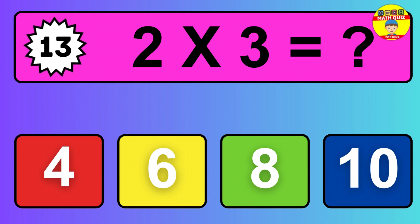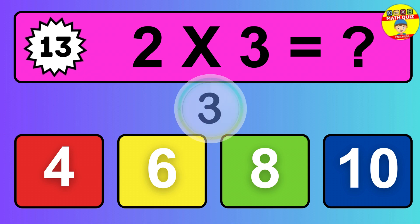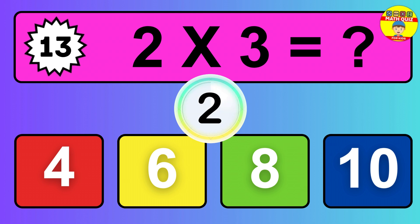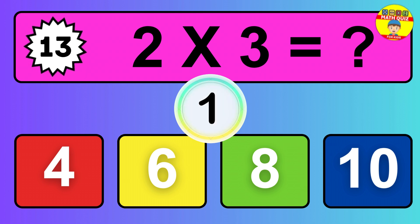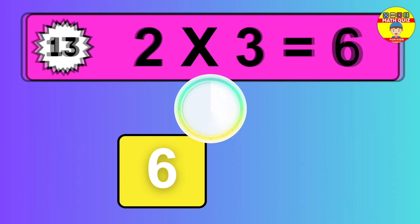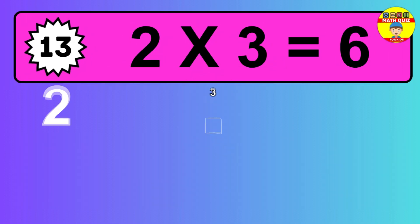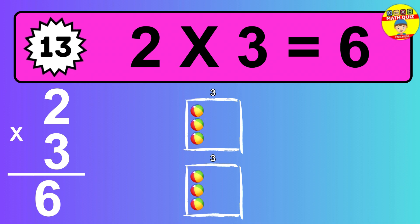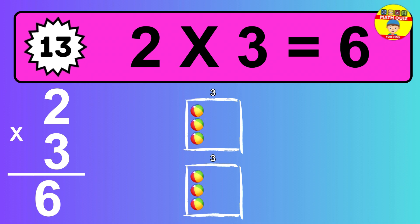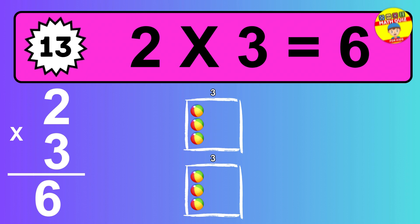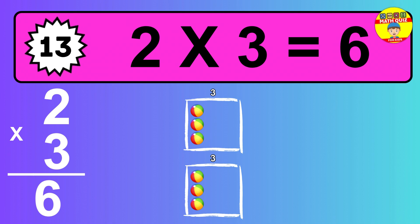Question 13. Two times three equals what? So the answer is two times three is six. To calculate, we have two groups with three balls each one. So how many balls do we have? Six balls.